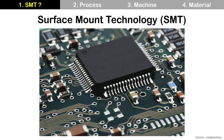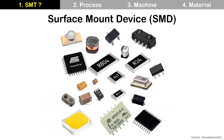SMT is a process to attach components on a package substrate or PCB — printed circuit board. The device to be attached on a package substrate or PCB using SMT is called a surface mount device, in short SMD. SMD can be a packaged die, passive component, and others. Passive components include resistors, inductors, and capacitors.